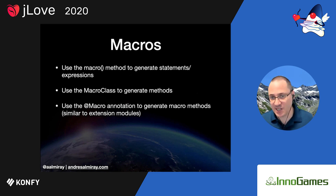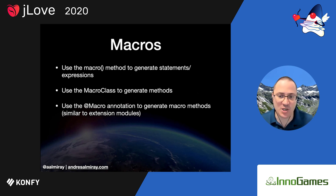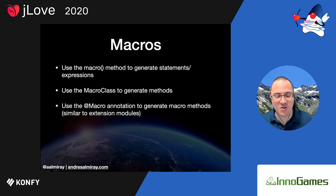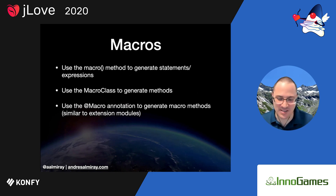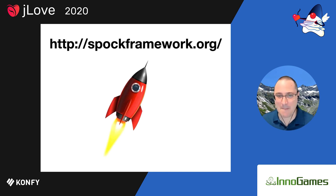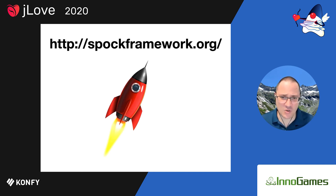Macro methods are only for statements or expressions. If you want to generate methods, you use macro classes. If you want your own version of a macro method, you can use the @Macro AST transformation. In fact, the macro method you always have access to is implemented using the @Macro AST transformation. If you want to know more about transformations, also look at the Spock framework — it is essentially one big AST transformation that performs a lot of massaging to the AST.